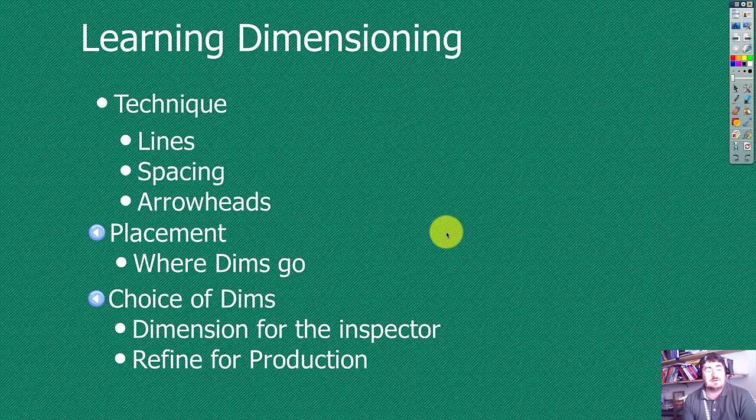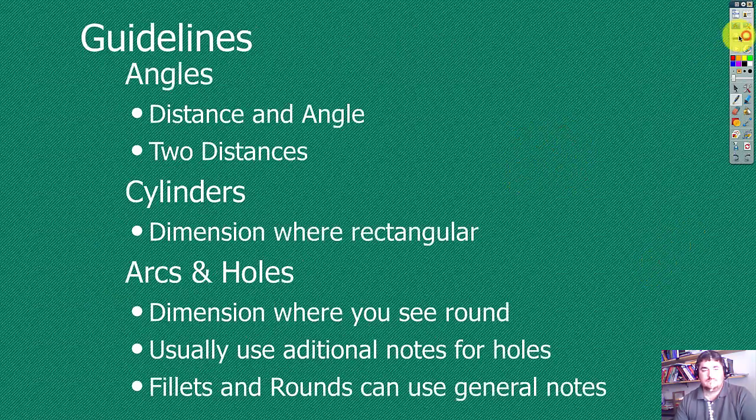If there's a toss-up and it doesn't really matter, then you refine it to make it better for the person doing production. We can also add reference dimensions to help production people so they don't have to do some math, but the inspector will know not to check those dimensions. To do that, we'll have the dimension and we put it in parentheses to make it a reference dimension.